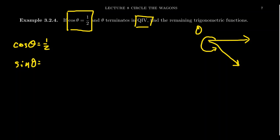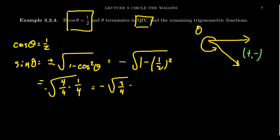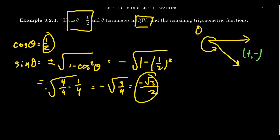Since I know cosine, I next want to compute sine. Sine equals plus or minus the square root of 1 minus cosine squared, where cosine is one half. So we get the square root of 1 minus one half squared. Because we're in the fourth quadrant, the x-coordinate is positive but the y-coordinate is negative, and since sine is the y-coordinate, we'll get a negative value. Simplifying: one half squared is one fourth; 1 rewritten as four over four gives us the square root of three over four inside. So sine equals negative square root of three over two. You may recognize that cosine equals one half and sine equals negative root three over two — this is one of our special angles in the fourth quadrant.